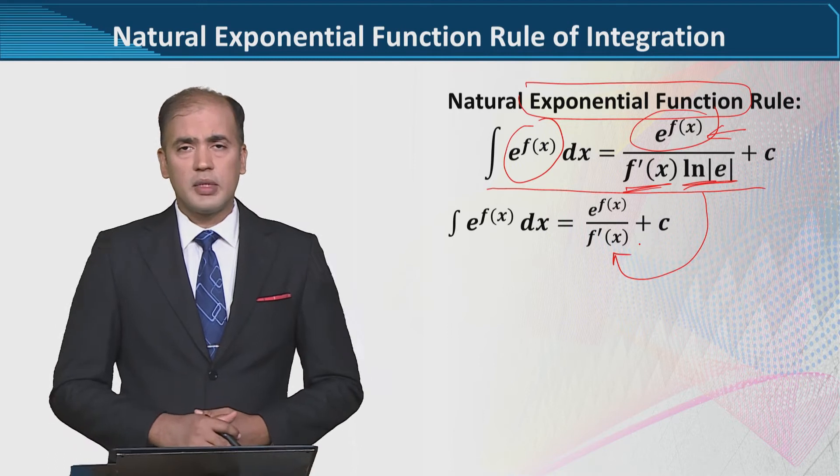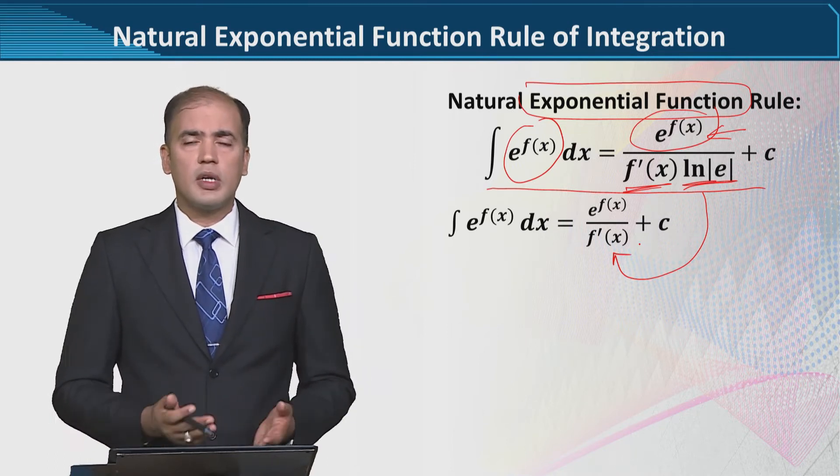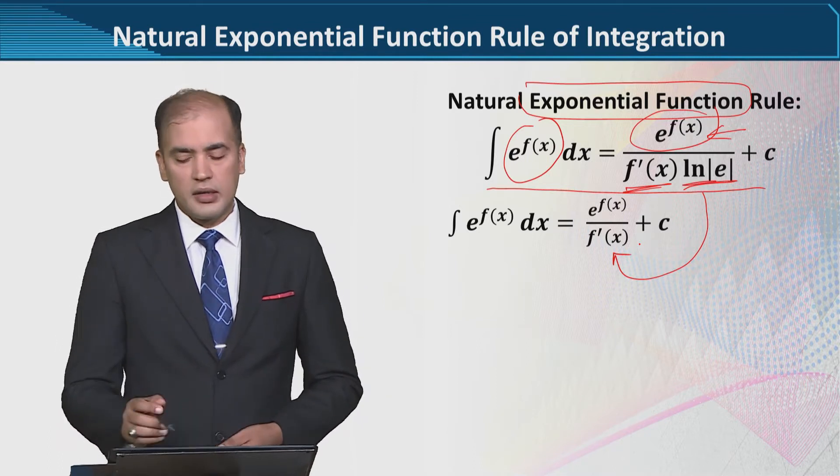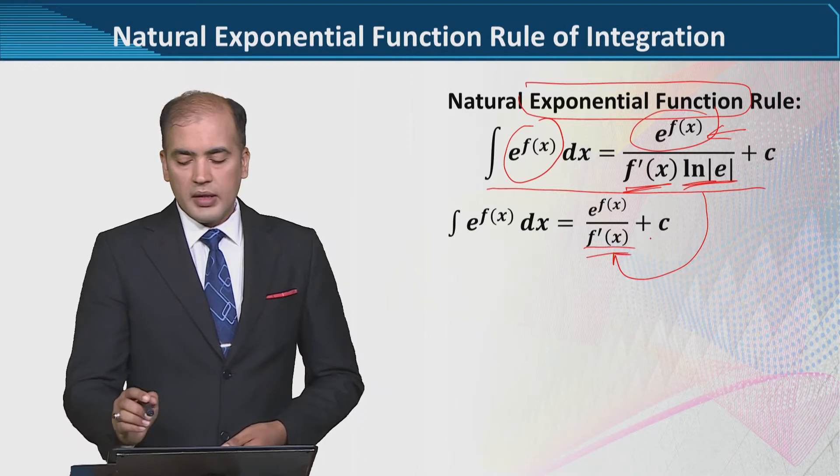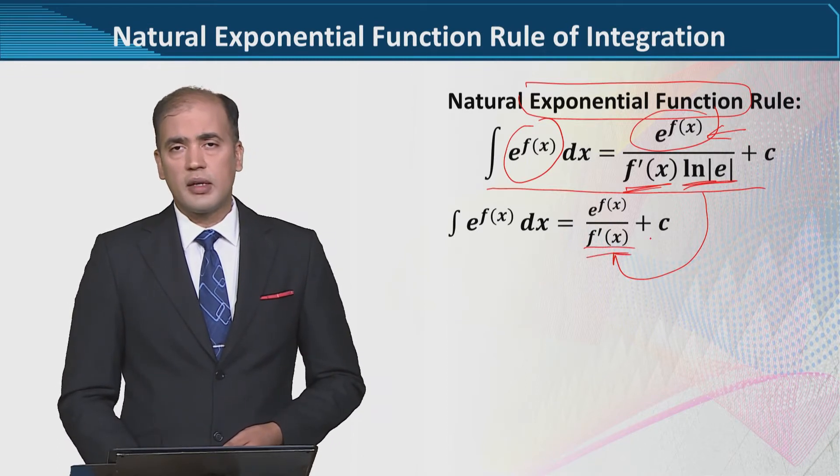You can see, as I have told you, natural log of e, that is the Euler number, is equal to 1. You multiply by f prime of x, divide by x, and it is not there anymore. So this is the rule that we are going to use, and see numerically if it holds.